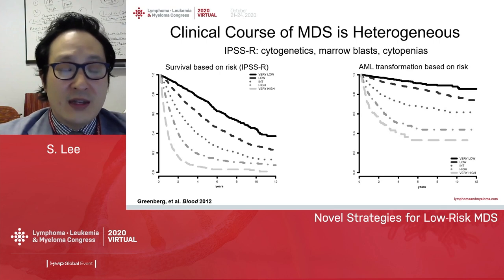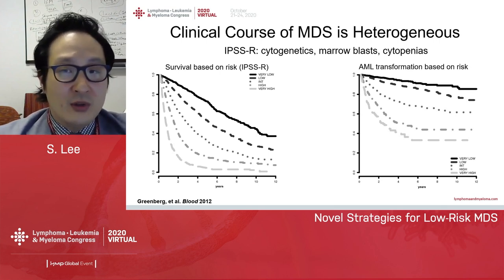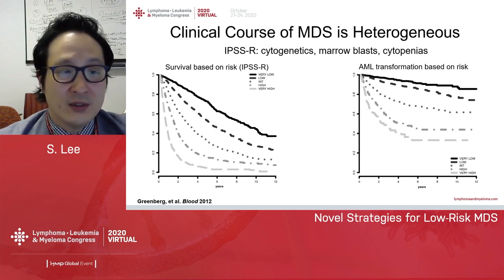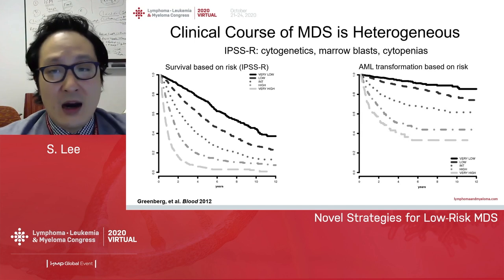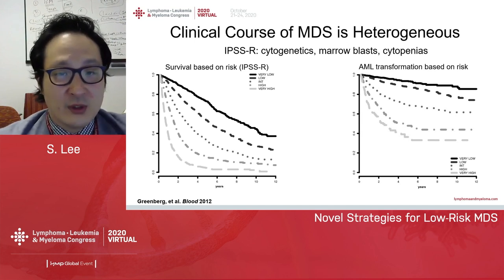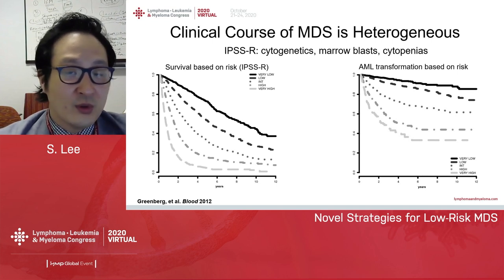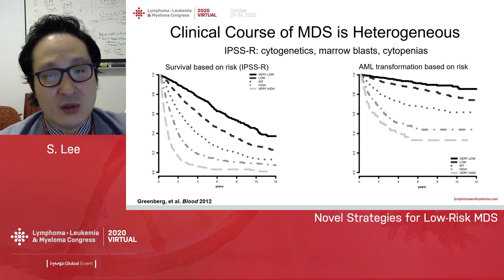It is important to note that MDS is a heterogeneous disease. Commonly used tools for risk stratification are IPSS and IPSS-R, which incorporates cytogenetics, bone marrow blasts, as well as degree of cytopenias. By IPSS-R, patients can be stratified to very low, low, intermediate, high, and very high risk categories. As you can see on these curves, both overall survival and rate of AML transformation vary depending on the IPSS-R classification.